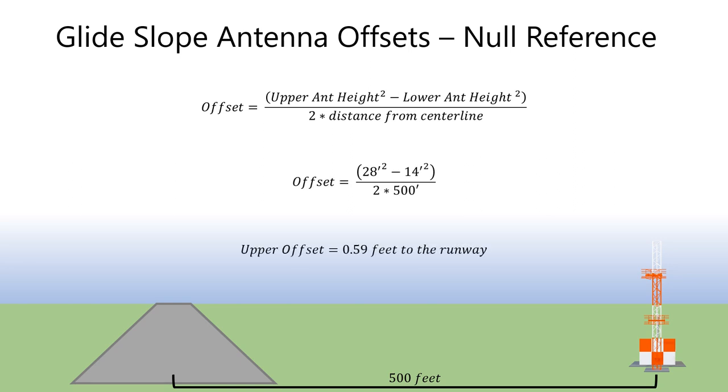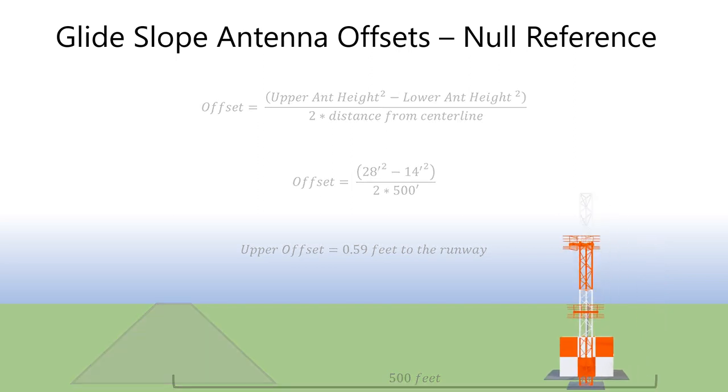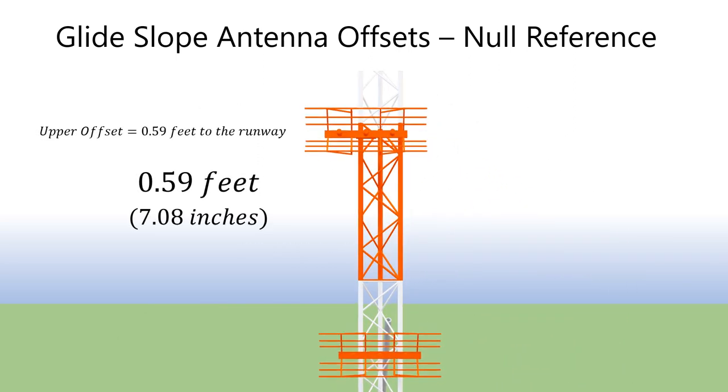The formula for determining the upper offset is as follows. Take the upper antenna height, squared, minus the lower antenna height, squared, divided by two times the distance of the glide slope tower from runway centerline. If we use our previous height calculations and a typical glide slope distance from centerline of 500 feet, we get a result of 0.59 feet for the upper antenna offset. Taking a closer look at this offset, we can see the offset is relative to the center dipole of the lower antenna to the center dipole of the upper antenna and would be moved towards the runway.